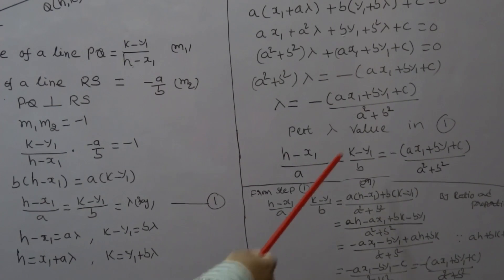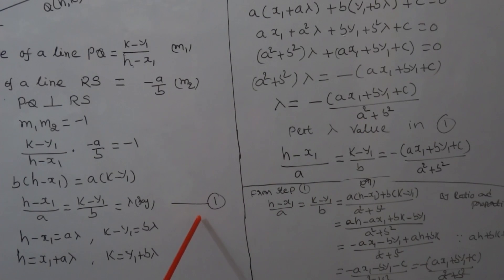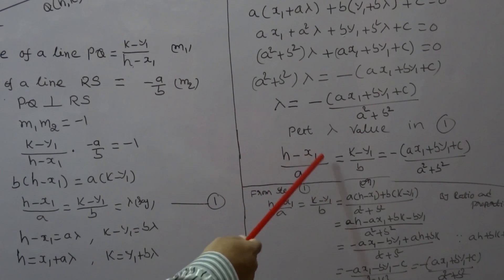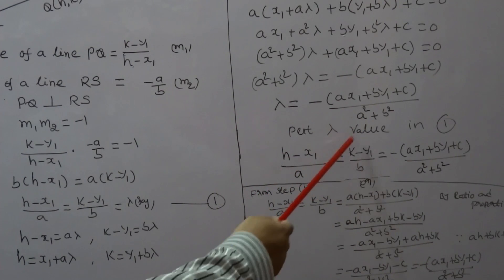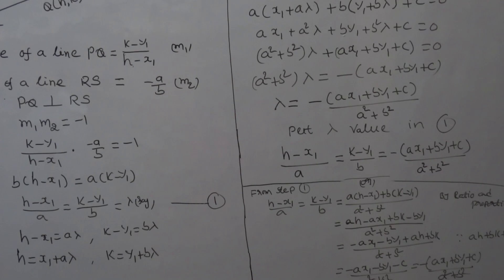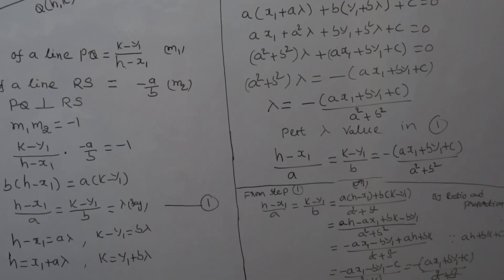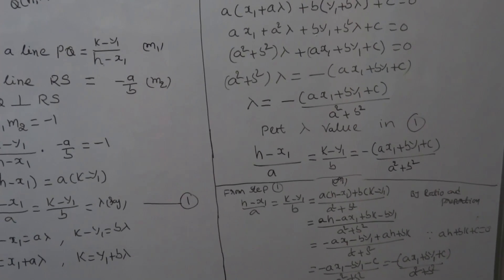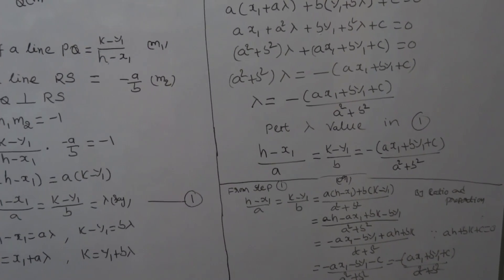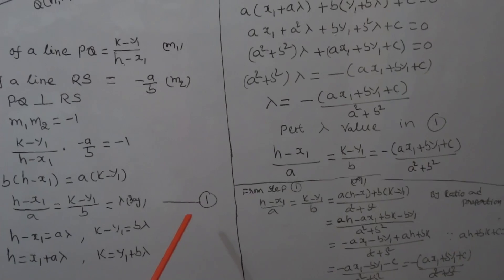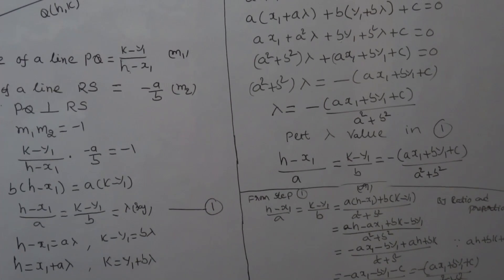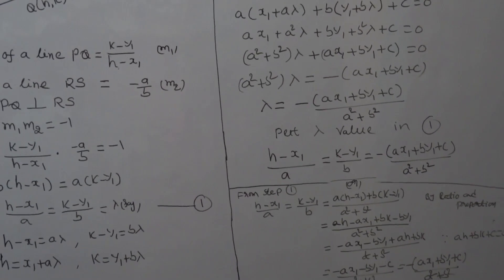Putting the value of lambda back, we get the final formula: (H - X1)/A = (K - Y1)/B = -(AX1 + BY1 + C) / (A² + B²). This is the formula for the foot of the perpendicular. Alternatively, we can use the ratio and proportion method from the same step.